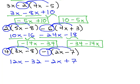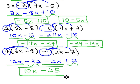Now, we're ready to combine like terms on the x's. 12x minus 2x is 10x, and on the numbers, negative 32 plus 7 is negative 25. Again, the order of the terms doesn't matter, so you could have negative 25 plus 10x.